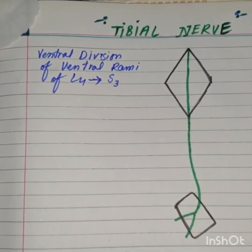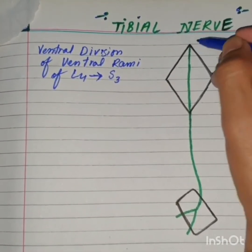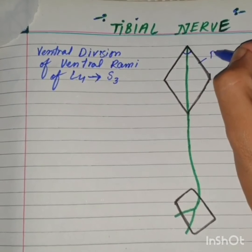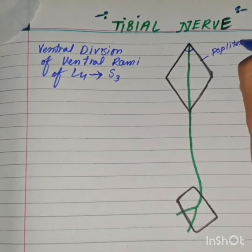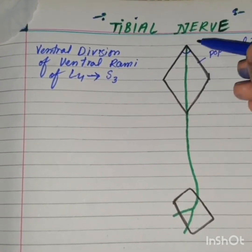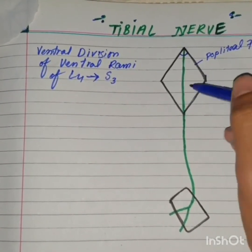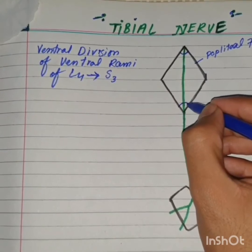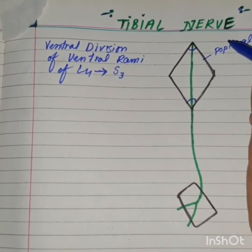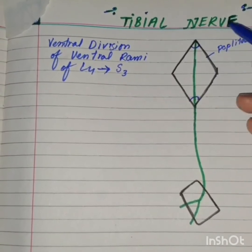Now talking about the course of the tibial nerve: the tibial nerve begins at the superior angle of the diamond-shaped popliteal fossa. It descends vertically downward, passing through the inferior angle of the popliteal fossa, and it lies superficial to the popliteal vessels. This is the course of the tibial nerve in the popliteal fossa.